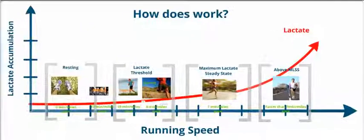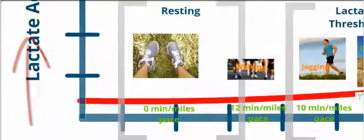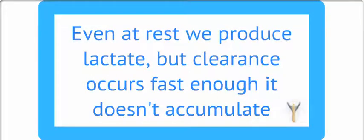So how does it work, and when do we achieve a threshold? When we go from resting to running, increasing the speed, the lactate will start accumulating at a faster rate. When we are resting, we are generating lactate, but the clearance occurs fast enough, as you can see on our funnel analogy.